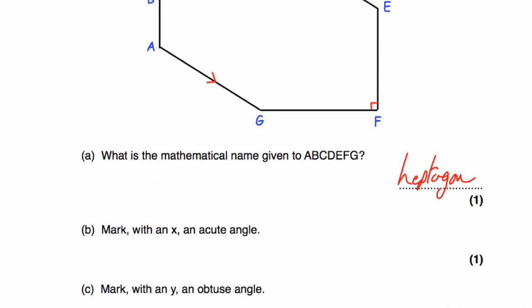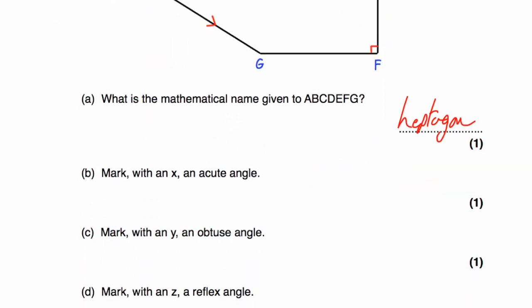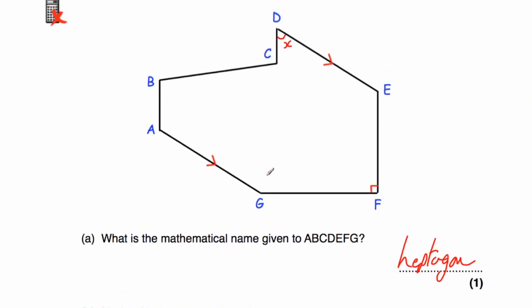Part B says: mark with the letter X an acute angle — an angle that's less than 90 degrees. There's a right angle, so it can't be that. That one's obtuse. The angle up here is an acute angle — the angle at point D, angle CDE. Let's call that X. Part C says: mark in an obtuse angle and call it Y — bigger than 90 degrees but less than a straight line. There are four possible obtuse angles; any of those would work. I'll just leave the one at the bottom, but you could have any of the four.